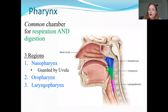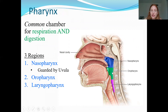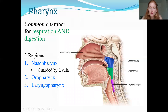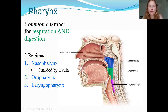The pharynx is an anatomical term for your throat, and it is a common chamber for both food and air. Further down, the larynx is just for respiration — air only — and the esophagus runs right behind it. But in the pharynx region, both food and air pass through.